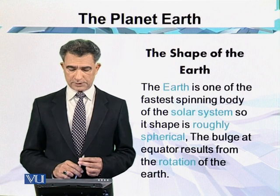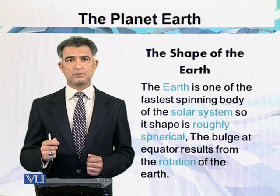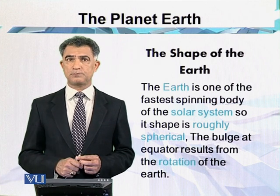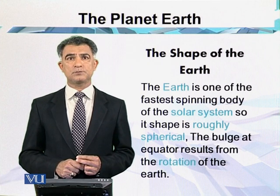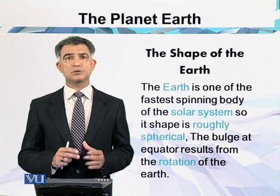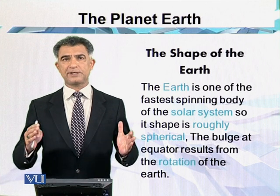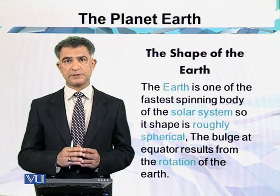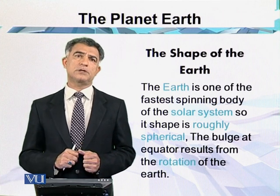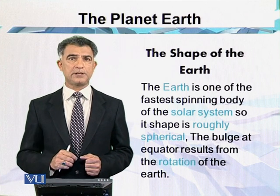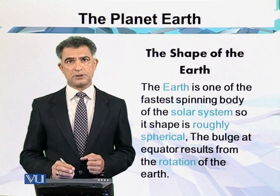The bulge at the equator results from the rotation of the earth. The earth spins from west to east, and with this rotational force, material is pushed outward at the equator. So the bulge is at the equator, but the polar diameter is less than the equatorial diameter.